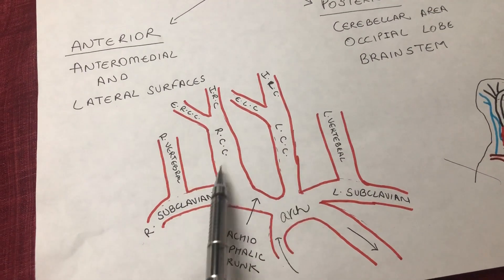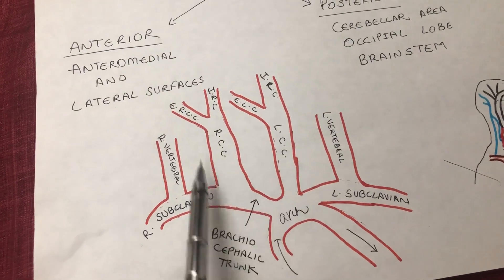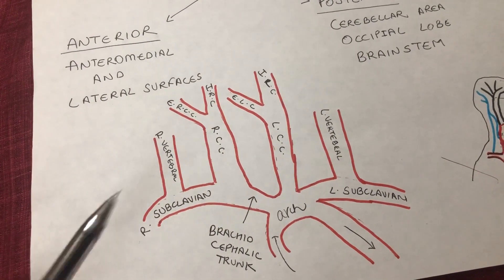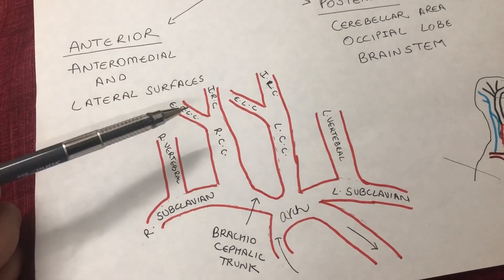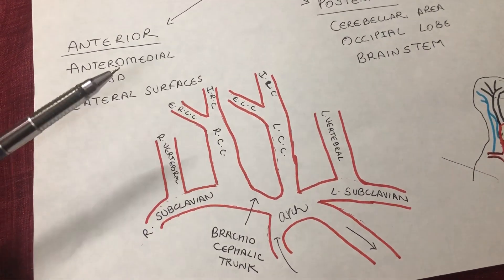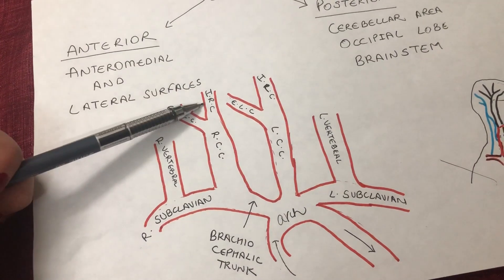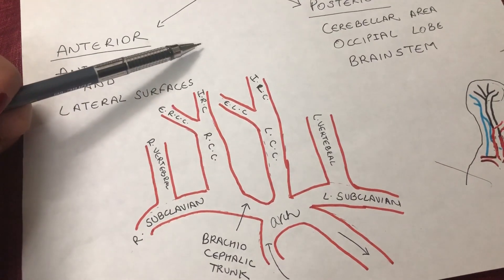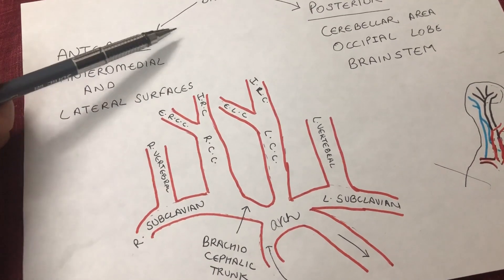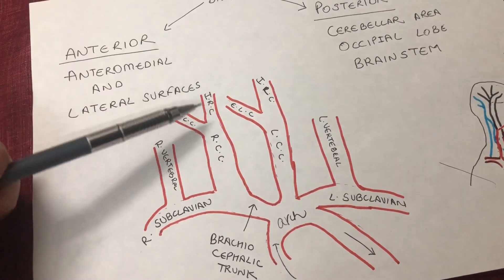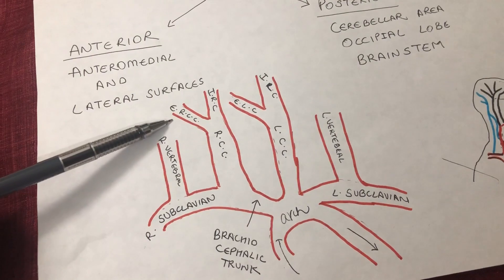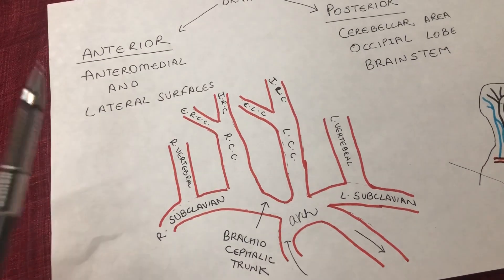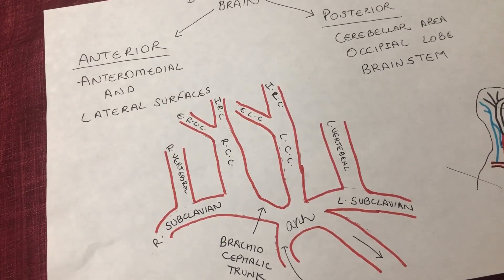The carotids together form the anterior circulation, because as they ascend upwards, they divide into internal carotids that go to the brain — forming the ACA and MCA — and the external carotid that goes to your face. But that's the anterior circulation.